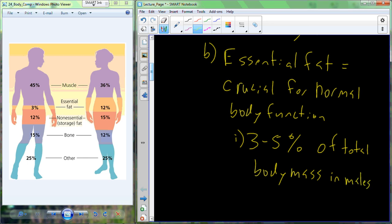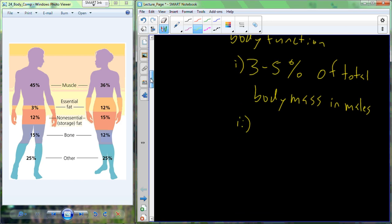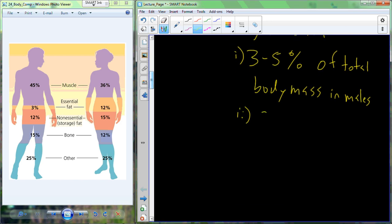In males, the total composition of fat should be between 8% and 12% of our total body mass. So 8% to 12% of the total body mass should be attributed to essential fat in males.